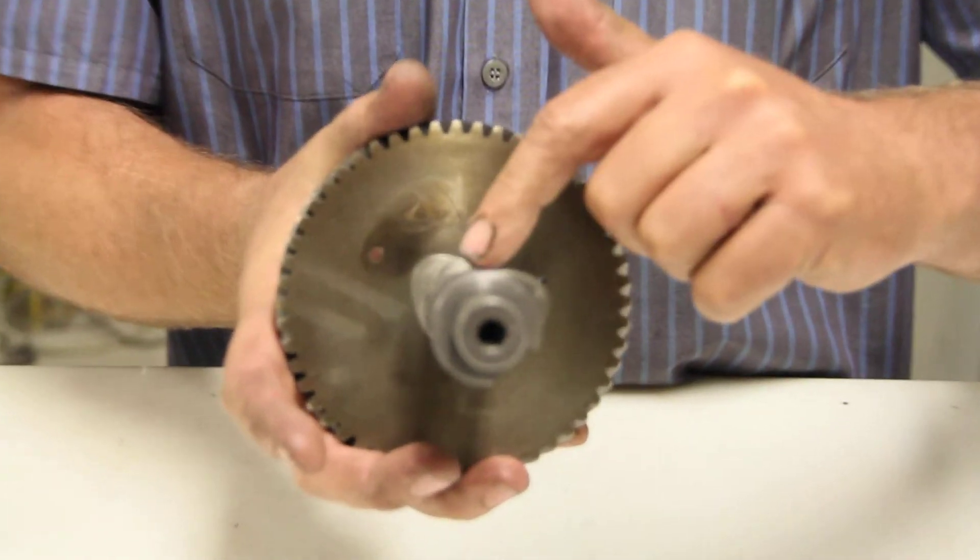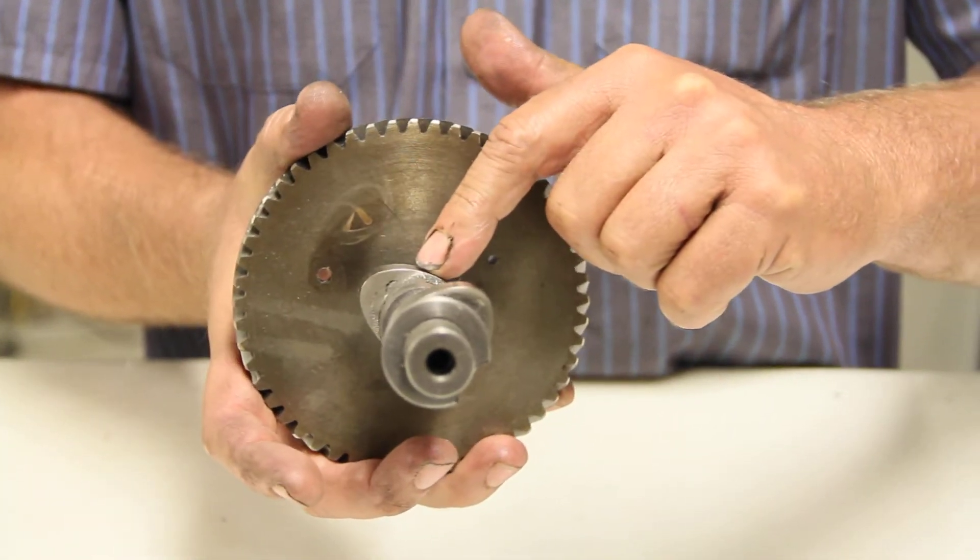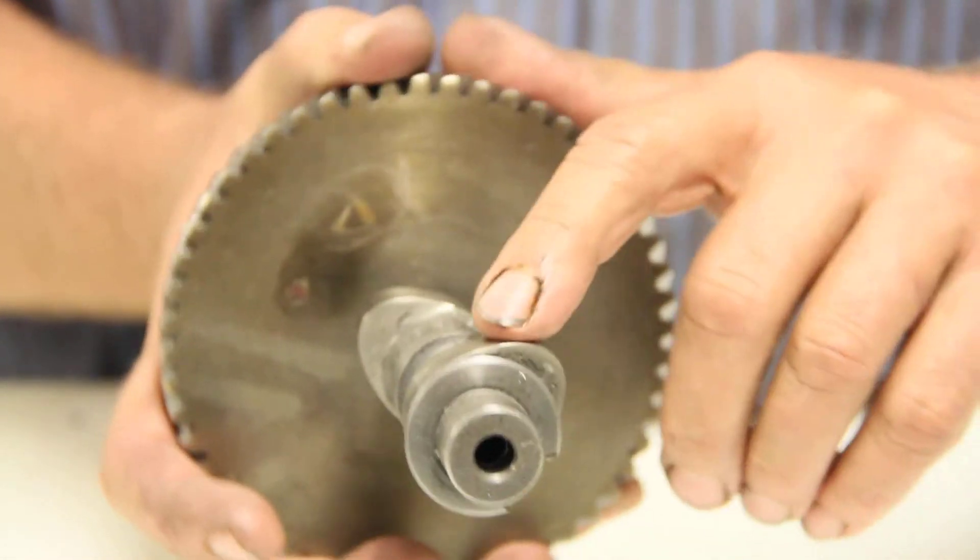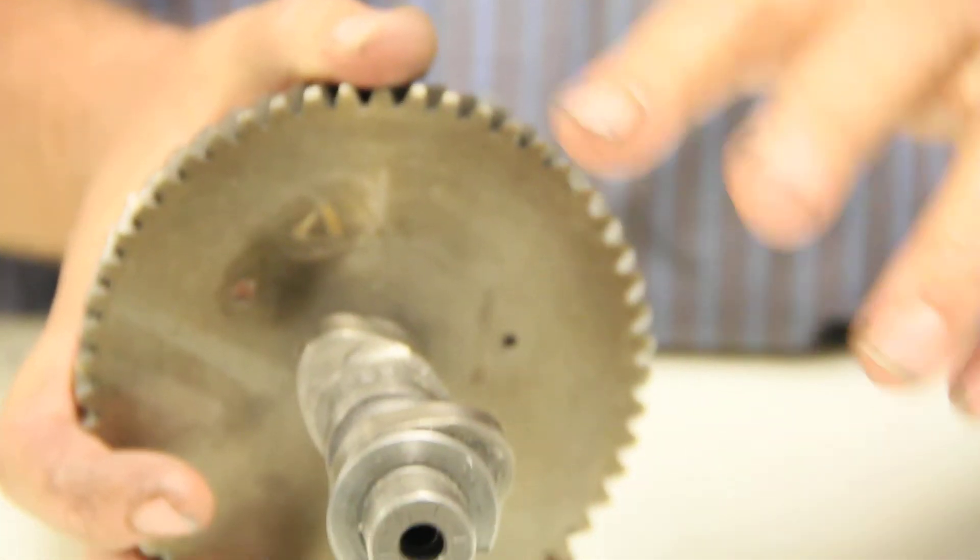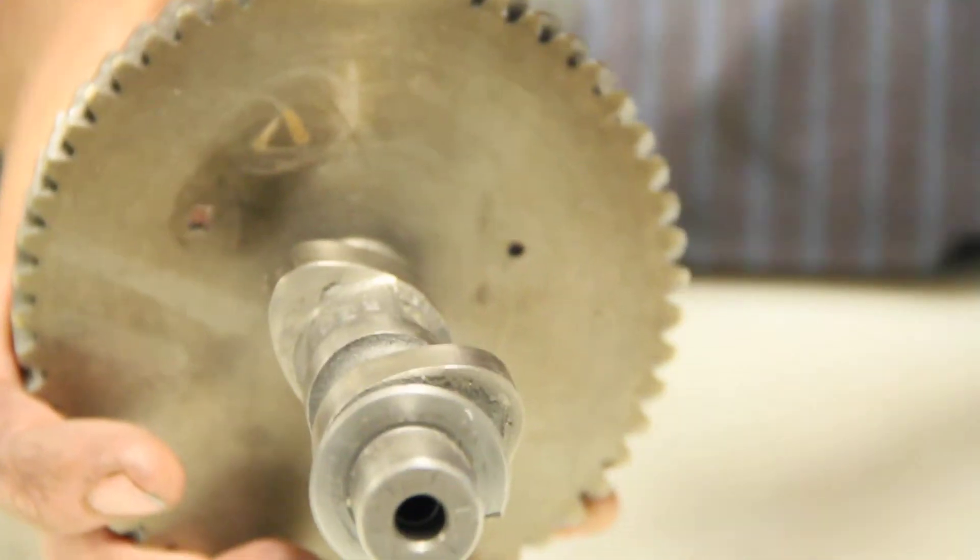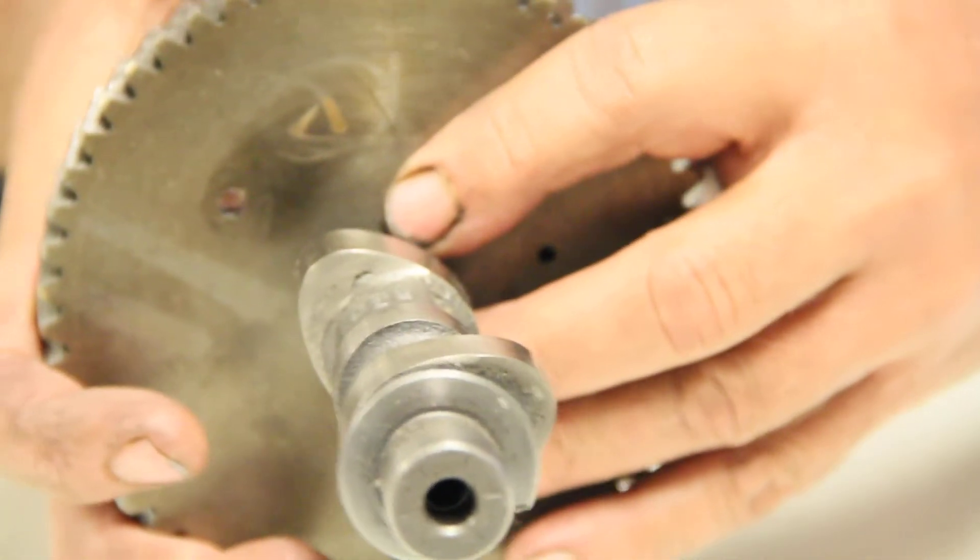You can see if you look here - this cam lobe is just closing, that one's just opening. So as it goes around, this one's closing, that one's opening. When both valves are the same height off the top of the block, as in a flathead, that's the overlap. That's top dead center.